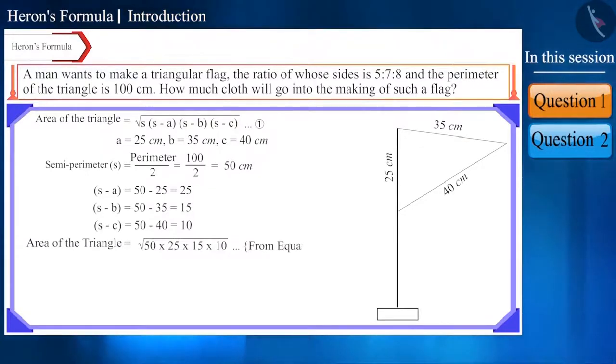Friends, as you can see, this is a very big figure and we still have to find its square root. In such cases, it's easy to find the square root by writing it in the form of factors. Here, we can write 50 as 5 × 5 × 2, 25 as 5 × 5 and 15 as 5 × 3 and 10 as 5 × 2.